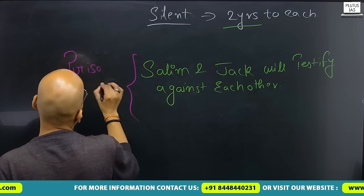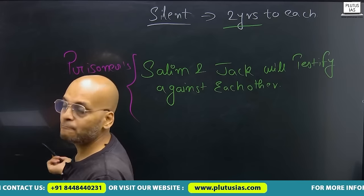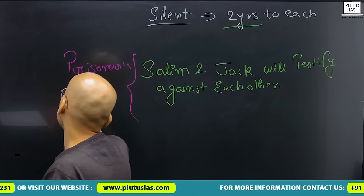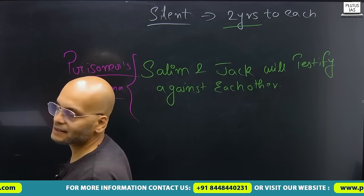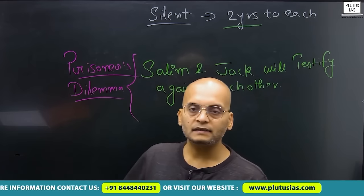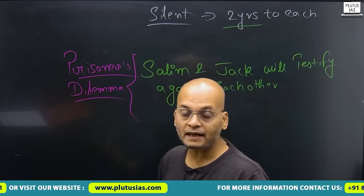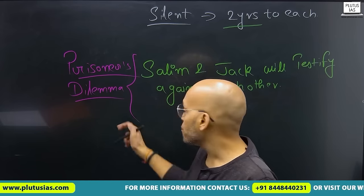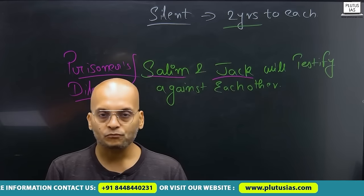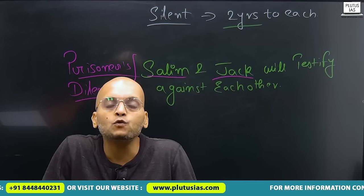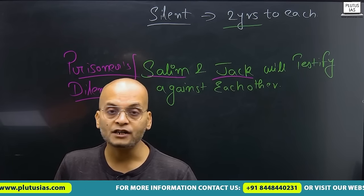They are in a dilemma — they are not sure that if they remain silent and the other testifies against them, they will have to serve a longer sentence. Under this dilemma they testify against each other. Both Salim and Jack both have to serve five years each — both are losing in this case. This is certainly a violation of zero-sum game.